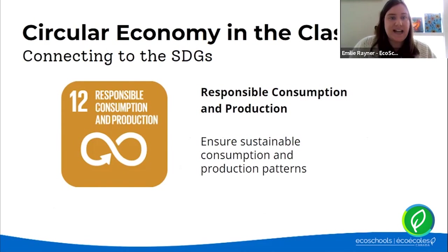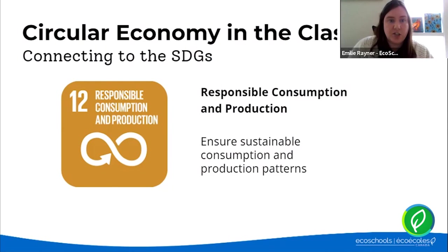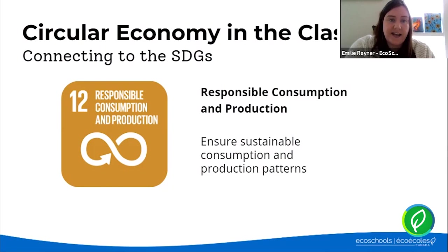These six actions can all be connected to the Sustainable Development Goals, also known as the SDGs — a collection of 17 interlinked global goals designed to create a blueprint to achieve a better and more sustainable future for all. They recognize that ending poverty must go hand in hand with strategies to improve health and education, reduce inequality, and spur economic growth, all while tackling climate change and working to preserve our oceans and forests. Most notably, the circular economy actions can be connected to SDG number 12: Responsible Consumption and Production.